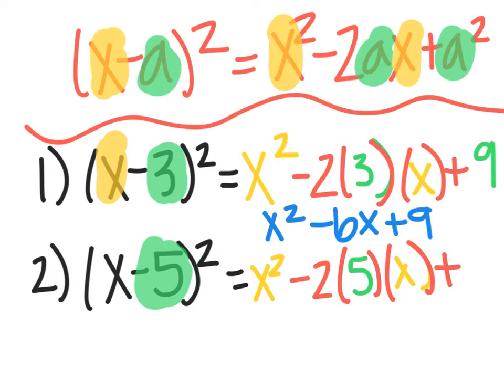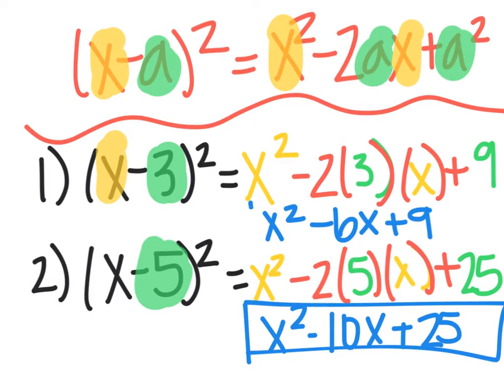at the end, I have a², which would be five squared, and that is 25. So I can simplify it, and it becomes x²-10x+25, and that's my final answer.